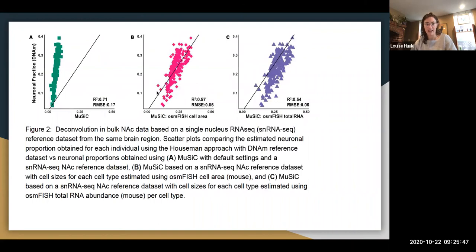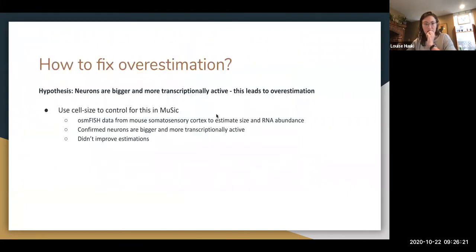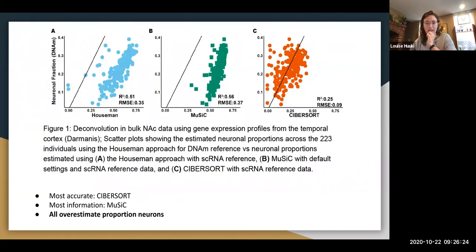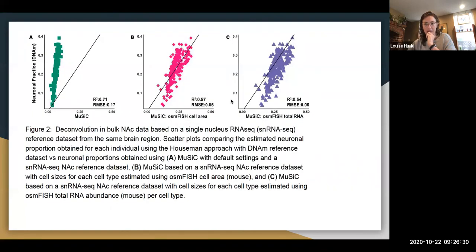So this is the results from that. So this is the default settings with the NAC reference data set. So we don't follow the one to one. And then we use cell area, we get a closer fit, and then total RNA based on the fluorescence imaging, we get also a tighter fit. But I think that if we go back to this, the R squared aren't that much better. So it's around point five still.